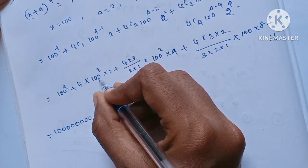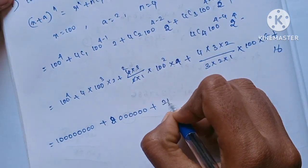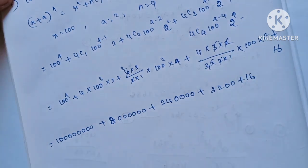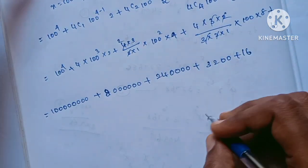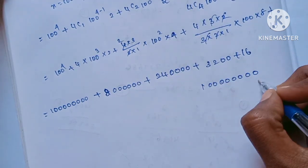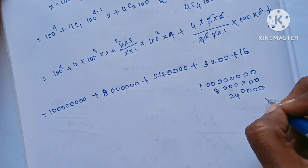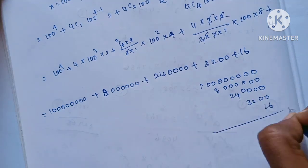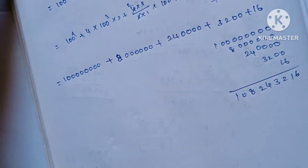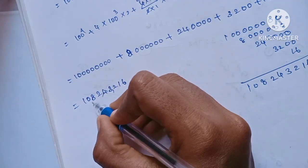Computing the terms: 4C1 gives 800, 4C2 gives 24, carry over values. Adding all the numbers together: the result comes out to 108,243,216. So this is the answer for 104 to the power 4.